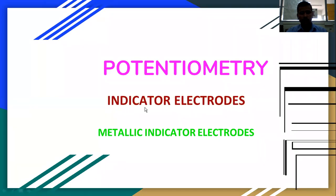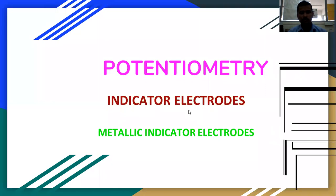We have understood about the types of reference electrodes in previous lectures. Now let us understand the indicator electrodes. The commonly used indicator electrodes in potentiometry include metallic indicator electrodes, ion-selective electrodes under the class of membrane electrodes, biosensors, chemosensors, gas-sensing electrodes, and biosensing electrodes. The objective proposed while designing the indicator electrode must be completely met in order to accept that particular electrode for potentiometric work.